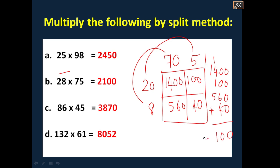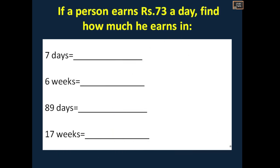Next: if a person earns rupees 73 a day, find how much he earns in seven days, six weeks, 89 days, and 17 weeks. Your time starts now.